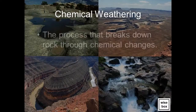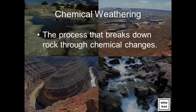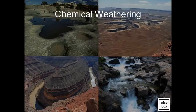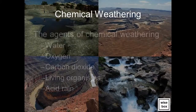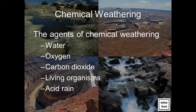Chemical weathering is the process that breaks down rock through chemical changes. The agents of chemical weathering include water, oxygen, carbon dioxide, living organisms, and acid rain.